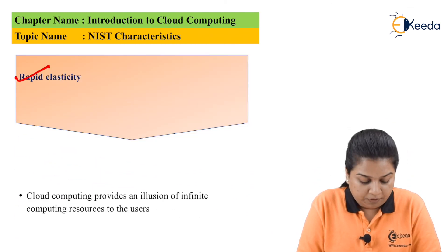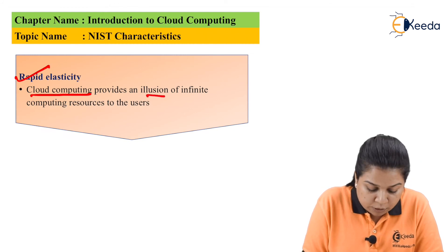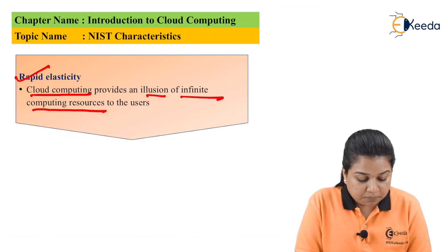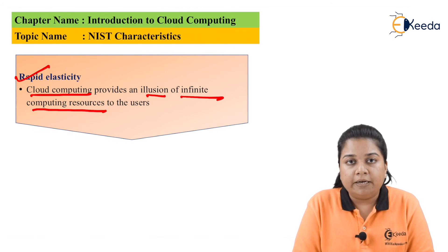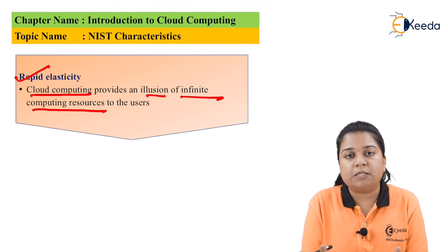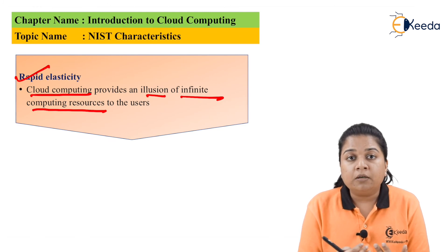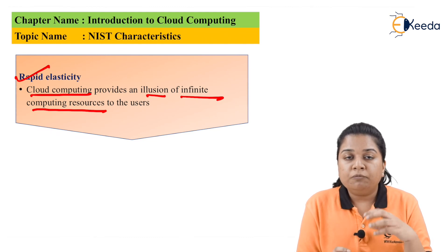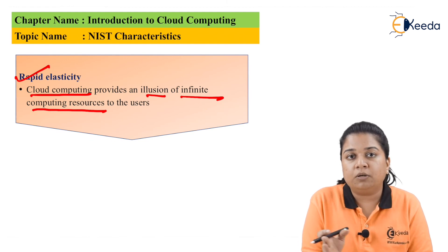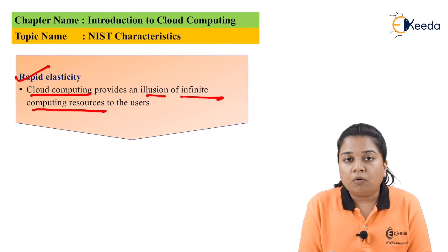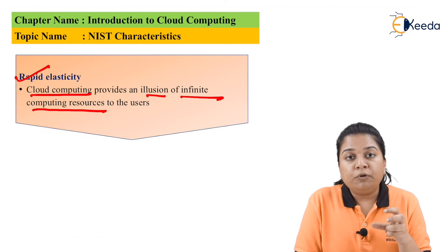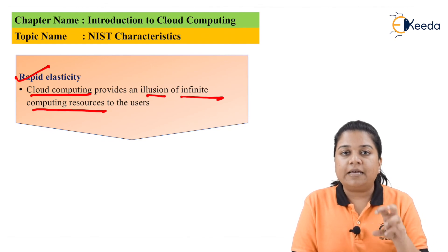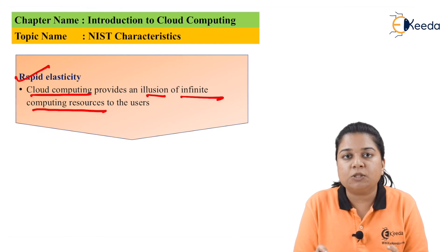The next characteristic is rapid elasticity. Cloud computing provides an illusion of infinite computing resources to users. This relates to scalability — as per need, you can increase or decrease the space, or increase or decrease network usage. In a physical network you do not have that option; if you are not using it, that resource is redundant. But in cloud computing, if you are not using it, it is freed up and can be used by someone else. Scalability and elasticity are thus basic features of cloud computing.